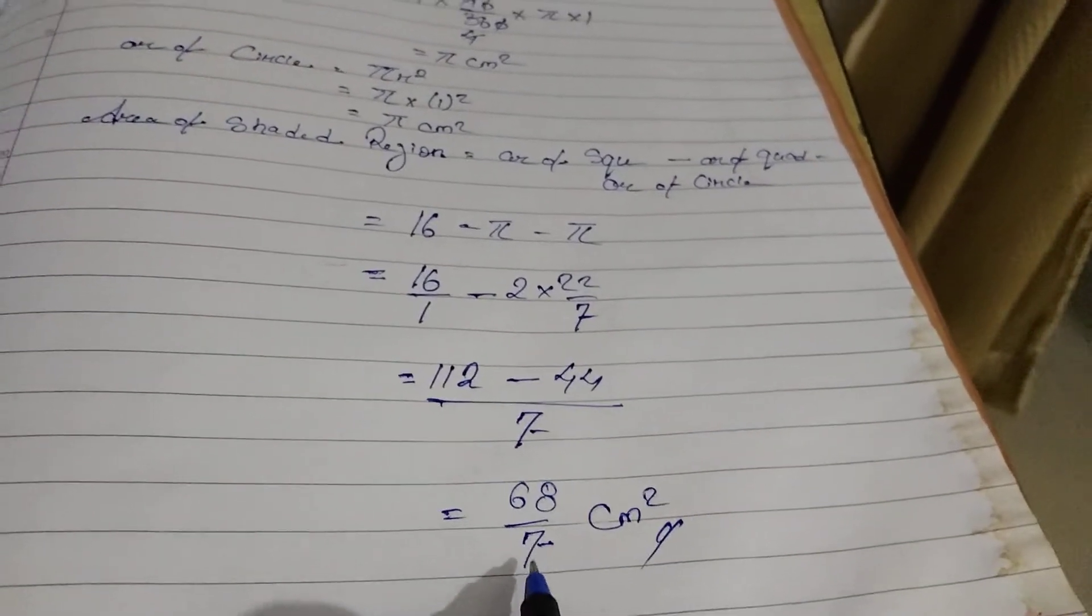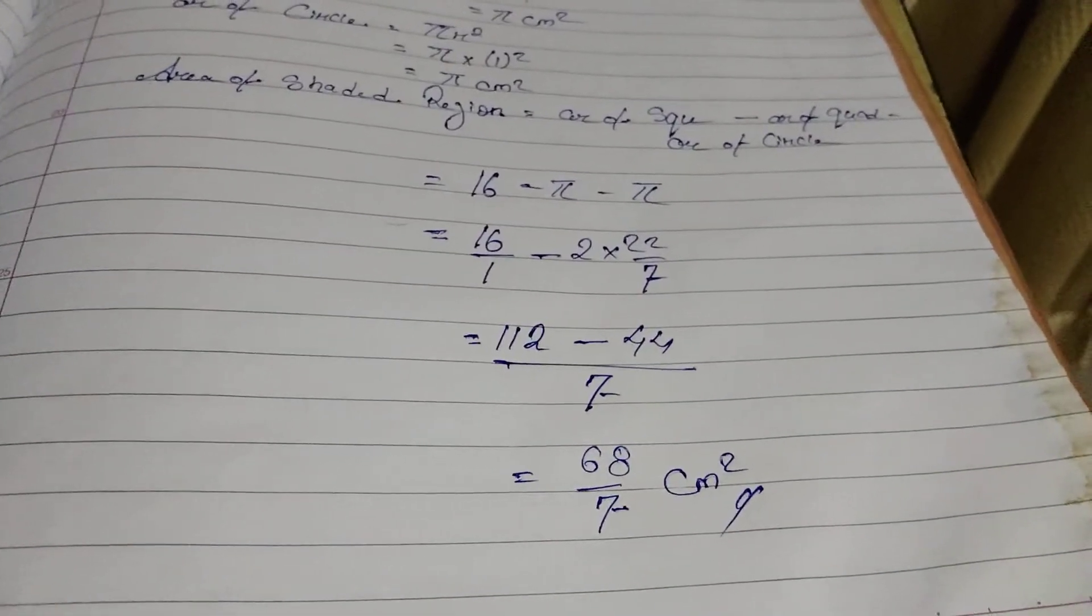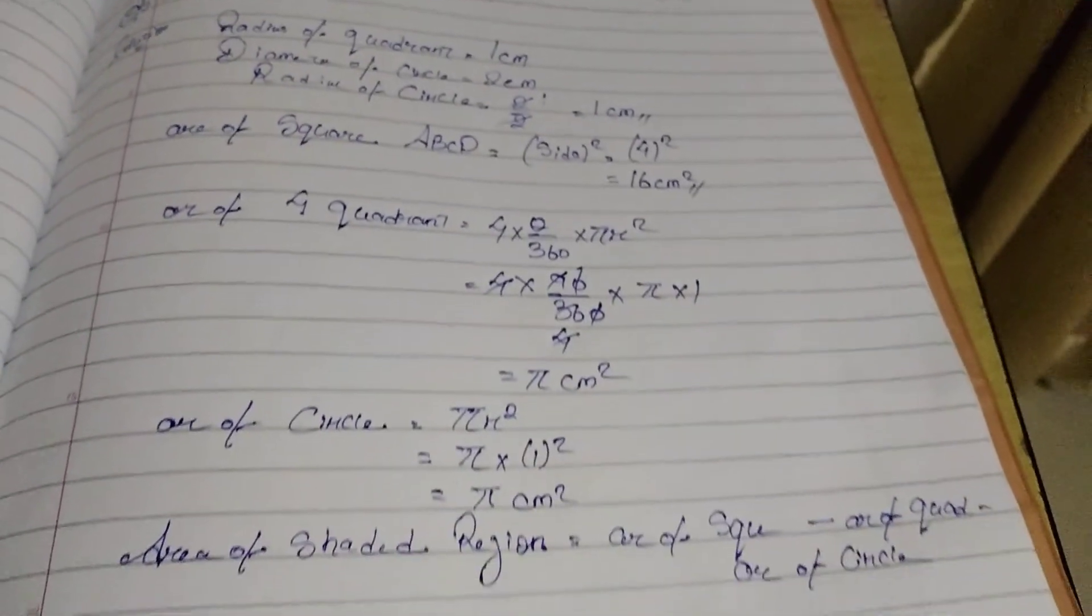You can stop here. If you want, you can do division and whatever you get, you can write down. That will also be correct. So, with this we are done with question 12.3 number 5. Thank you.